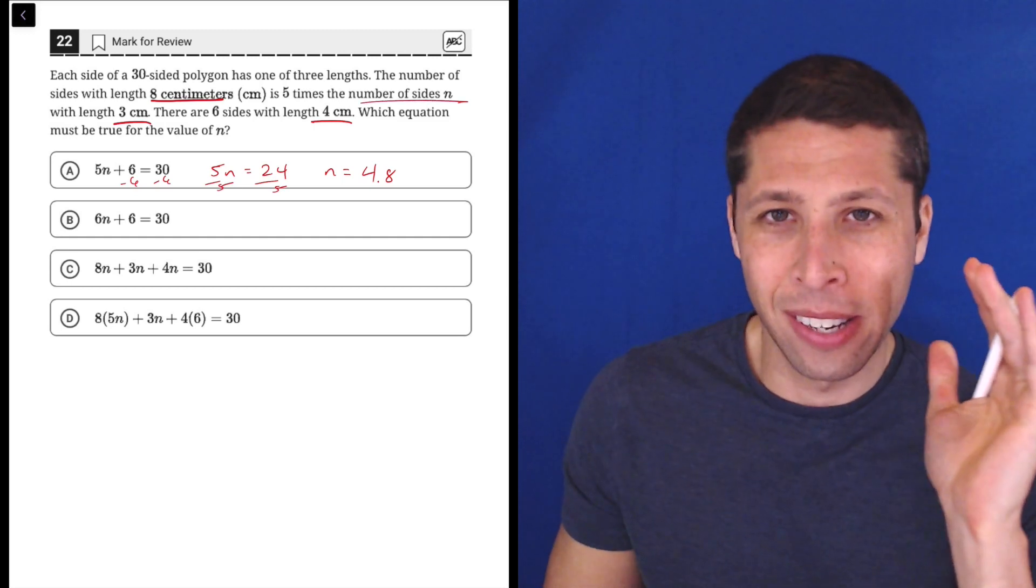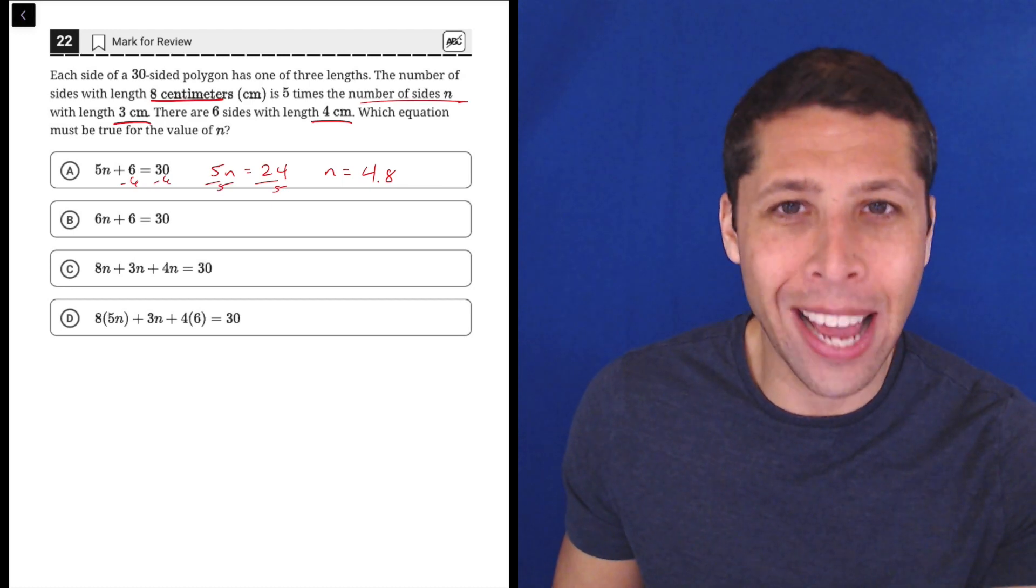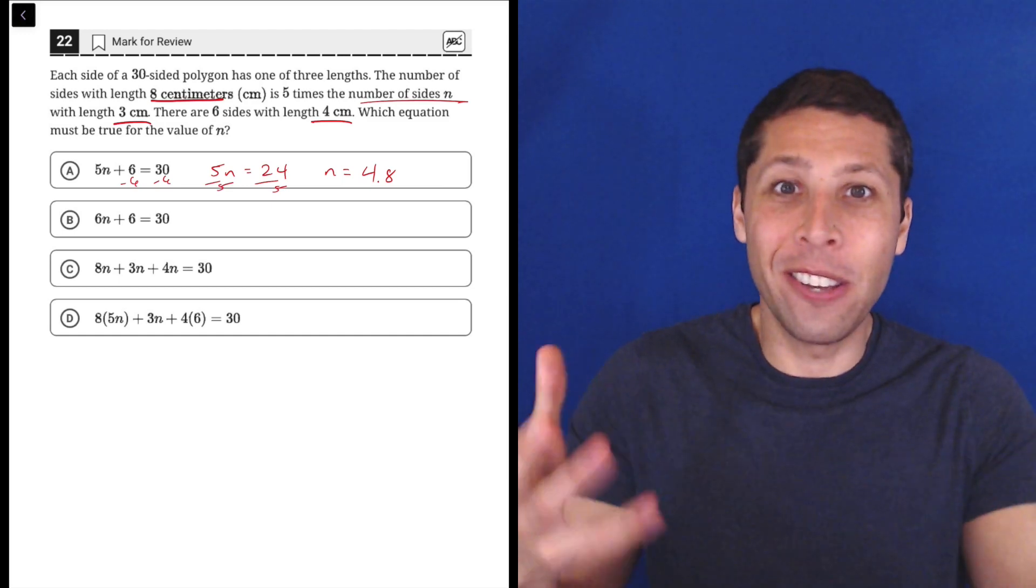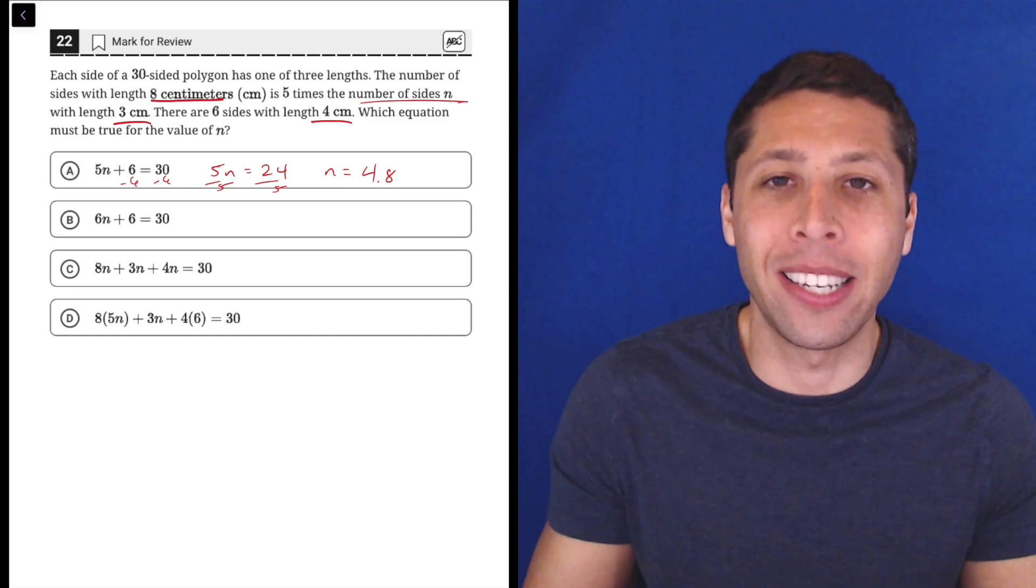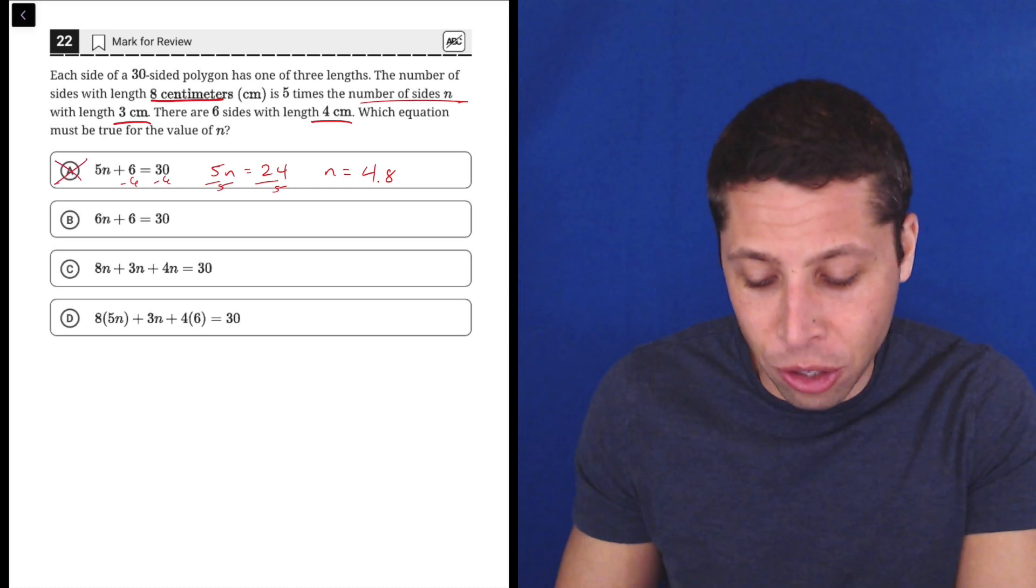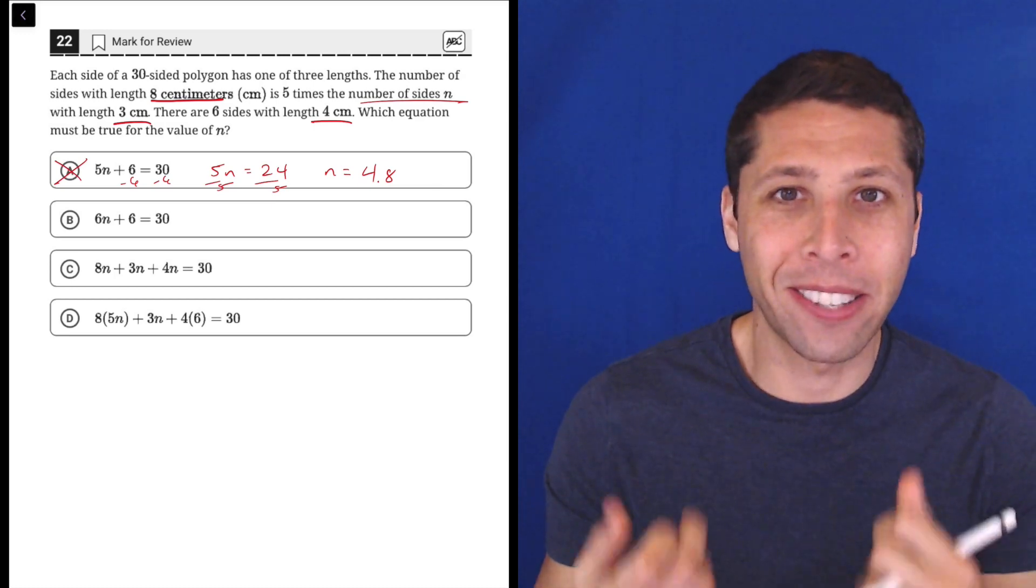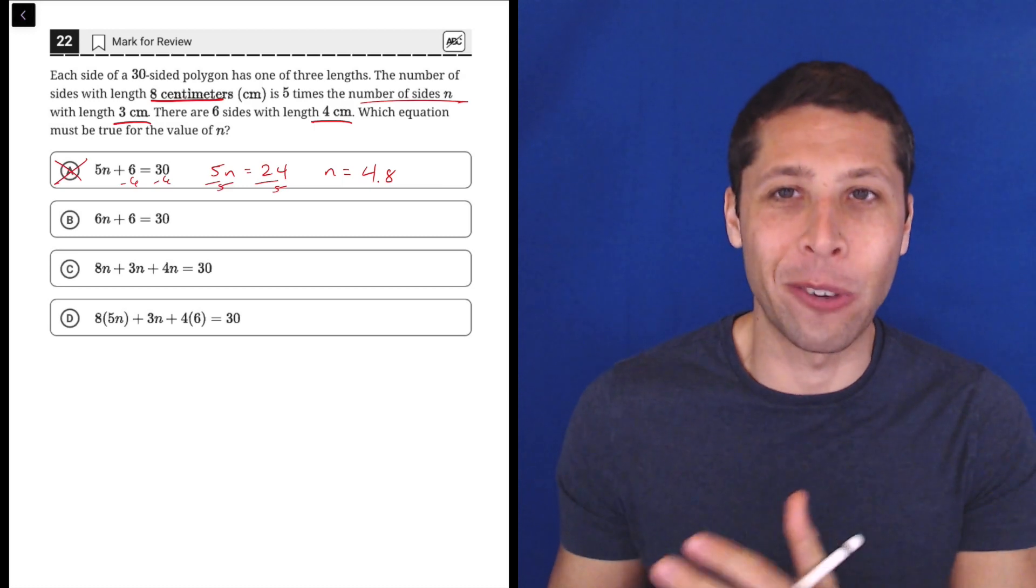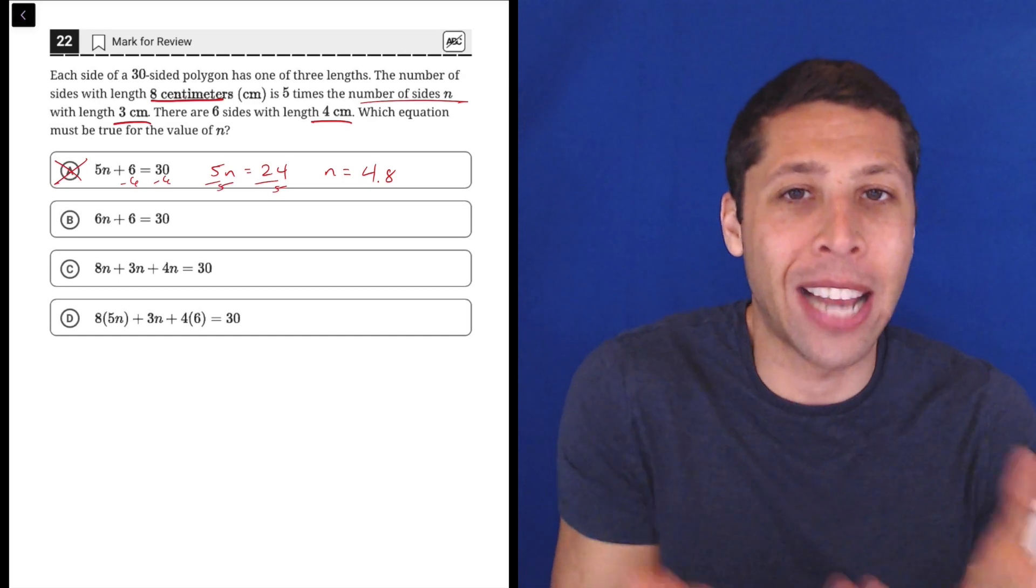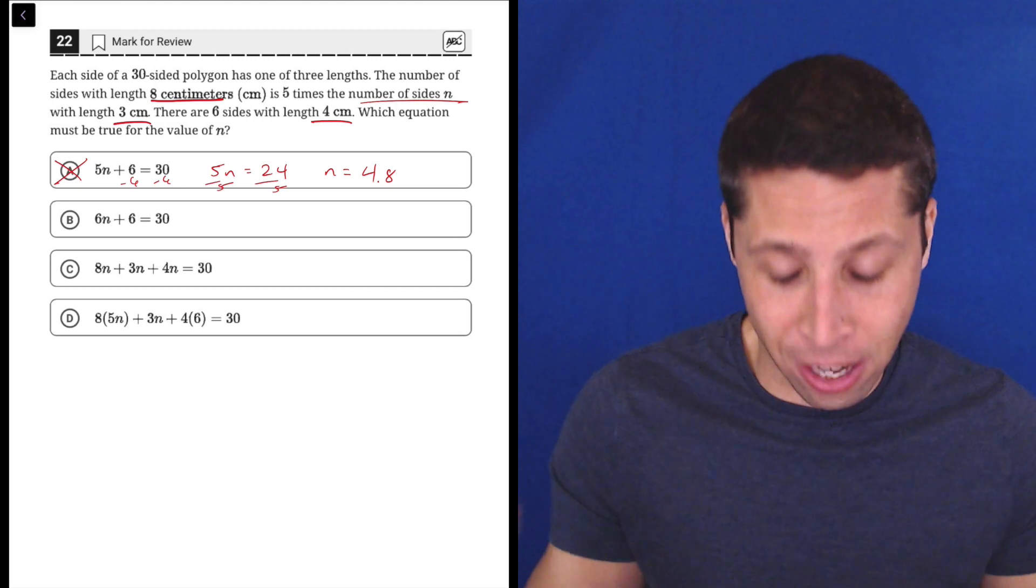And what does n mean again? n is the number of sides with the length of three centimeters. How can you have 4.8 sides? That doesn't make any sense. Sides cannot be fractions. You can't have half of a side of something. That doesn't make any sense. So this answer just doesn't make sense. I don't even know what's going on. I just know that n has to be an integer. It has to be a whole number. Because that's the only way that polygons work. You can only have 3, 4, 5, 6, 7 sides. You can't have 5 and a half sides. That doesn't make sense. So there we go. 4.8 sides. Can't do it. It's gone.